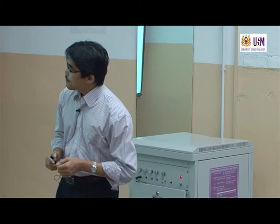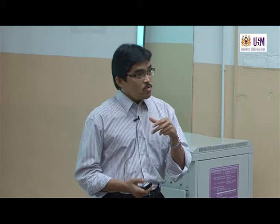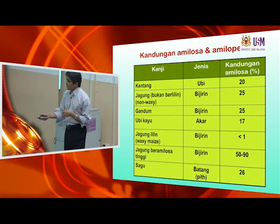The opposite of waxy is high amylose. So we have high amylopectin starch, which is waxy starch, and high amylose starch. High amylose starch is sometimes also known as amylo starch — so if we have corn, we call it amylo-maize. Something that starts with 'amylo' means that it contains a high amount of amylose. It can be between 50 to 90%.